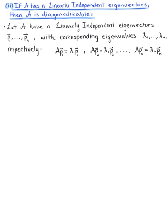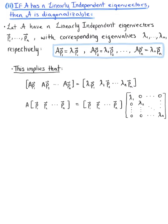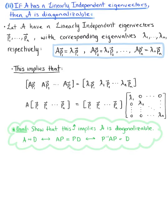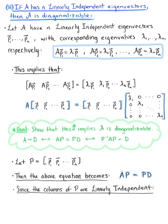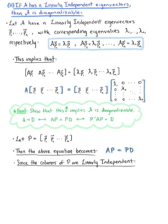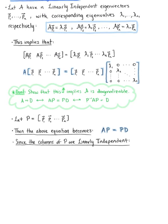And from case 1, we know that this implies the following. So our goal here is to show that this is going to imply that matrix A is diagonalizable. So let's go ahead and let matrix P be the matrix with column vectors P sub 1 through vector P sub n. Then the above equation can be rewritten as matrix A times matrix P is equal to matrix P times matrix D. Now, since the columns of matrix P are linearly independent, then matrix P is invertible by the invertible matrix theorem.